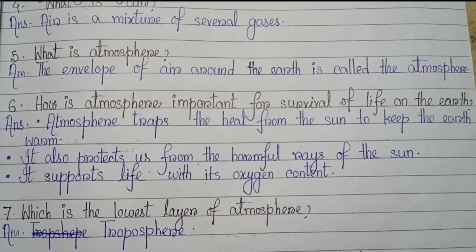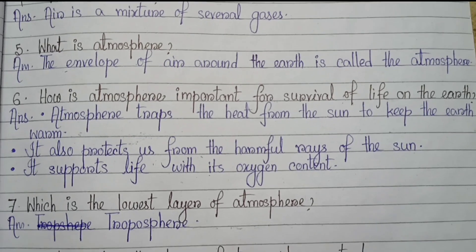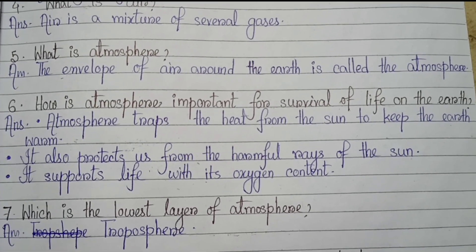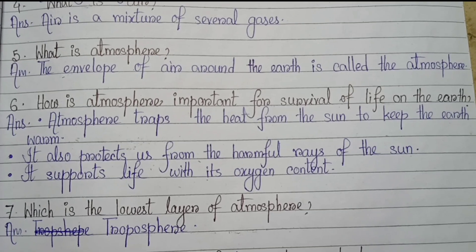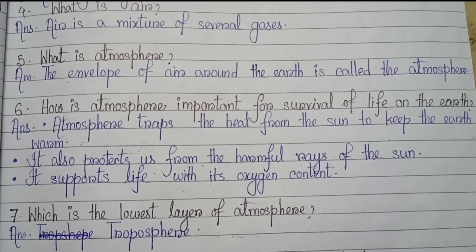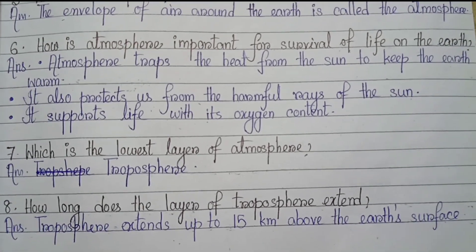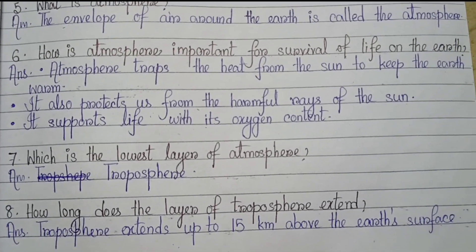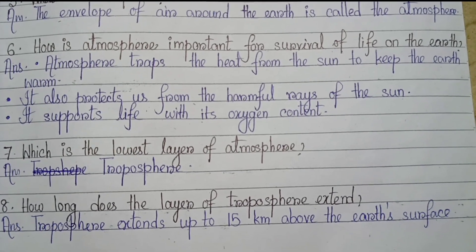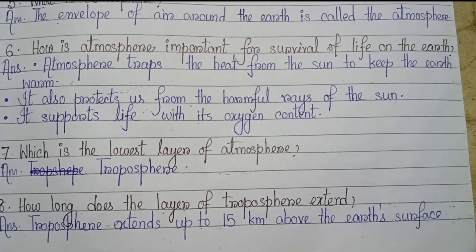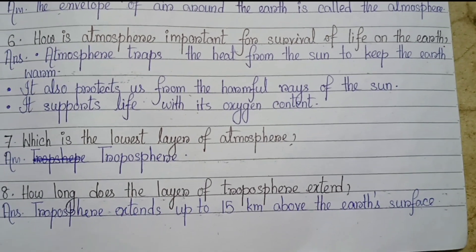Number 6: How is atmosphere important for survival of life on earth? The atmosphere traps the heat from the sun to keep the earth warm, it also protects us from the harmful rays of the sun, and it supports life with its oxygen. Number 7: What is the lowest layer of the atmosphere? That is the troposphere. Number 8: How long does the layer of troposphere extend? The troposphere extends up to 15 kilometers above the earth's surface.